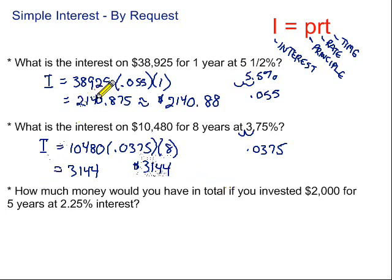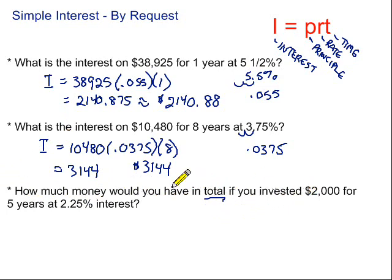Let's look at one more problem. In these first two, we're just looking for the amount that we would pay or be paid, depending on if we're getting a loan or investing. This last problem, we're going to be asked for the total amount we end up with using simple interest. It says: how much money would you have in total — that's a key word — if you invested $2,000 for five years at 2.25% interest? We're going to use this same formula, but then there's going to be one more step at the end.